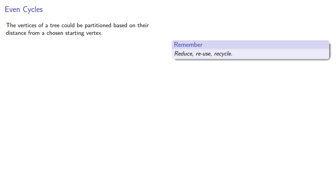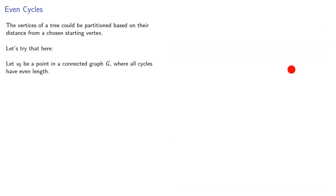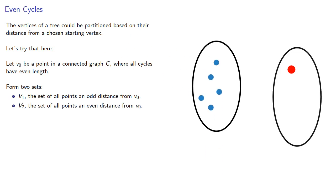The vertices of a tree can be partitioned based on their distance from a chosen starting point. Let's try that here. Let v0 be a point in a connected graph G where all cycles have even length. Form two sets: v1, the set of all points an odd distance from v0, and v2, the set of all points an even distance from v0. And if the graph isn't connected, we can consider each connected component separately.